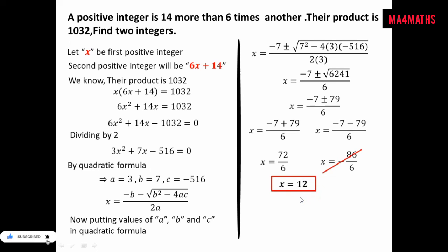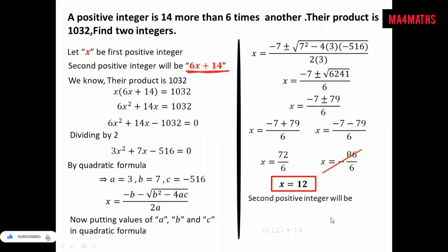Now we put x equals 12 into the expression for the second positive integer, which is 6x plus 14. Substituting x equals 12: 6 times 12 plus 14 equals 72 plus 14. So the second positive integer is equal to 86.